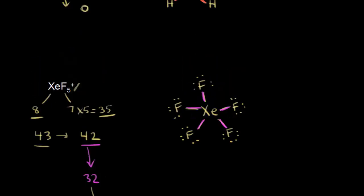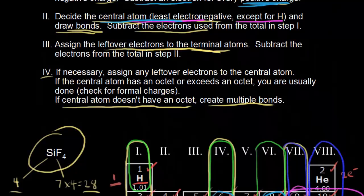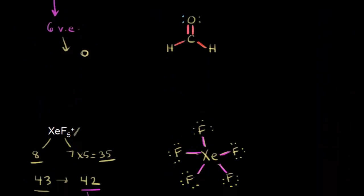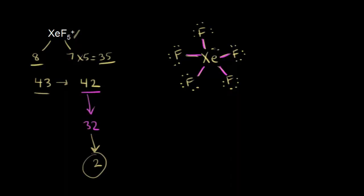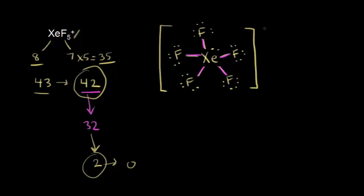With 2 electrons left over after step three, we go to step four: assign any remaining electrons back to the central atom. Since xenon already exceeds an octet, we simply place that lone pair on xenon, and we are done — all 42 valence electrons are accounted for. We represent this by putting brackets around the structure with a positive charge outside. That's the xenon pentafluoride cation. We'll do more dot structure examples in the next videos and see how they allow us to predict the shapes of molecules.